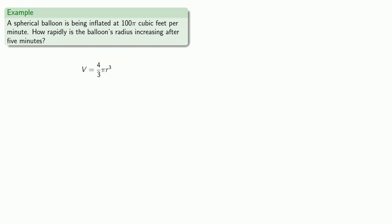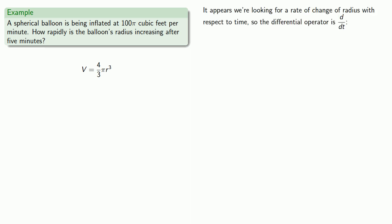One possible relationship is that the volume is four-thirds pi times the radius cubed. Next we want to identify the differential operator. We know we want a derivative because the question asks how rapidly something is changing. To decide on the differential operator we can use the units given in the problem. We're given a quantity of 100π cubic feet per minute, which sounds like a rate of change of volume with respect to time in minutes. So it appears we're looking for a rate of change of radius with respect to time, and the differential operator is the derivative with respect to time.